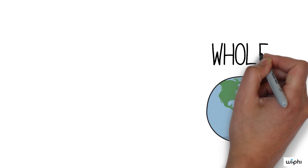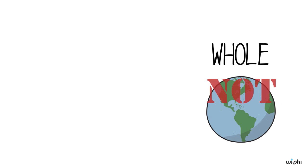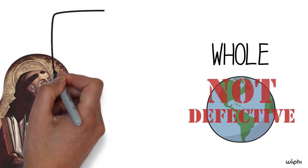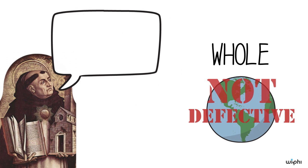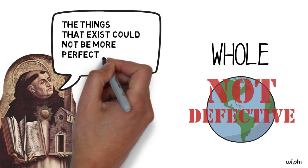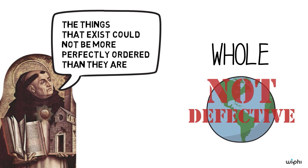But the world as a whole is by definition not part of a larger whole, and so it cannot be defective. That is why Aquinas insists that although God could have made a better world by making better things, the things that exist could not be more perfectly ordered than they are.